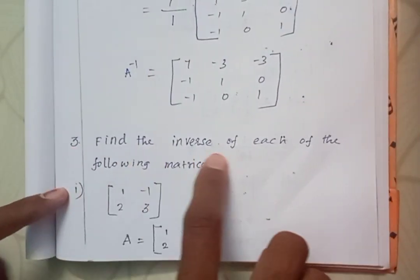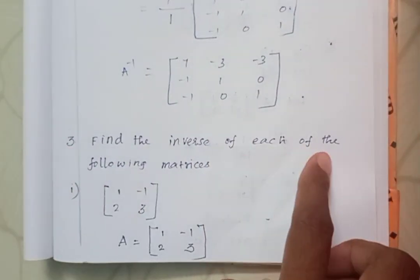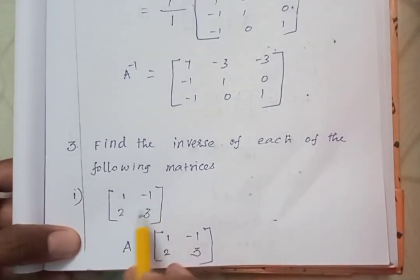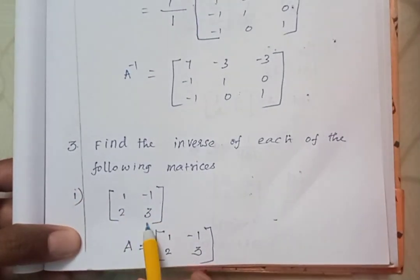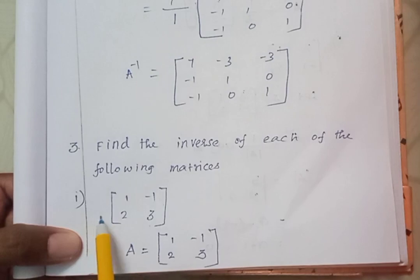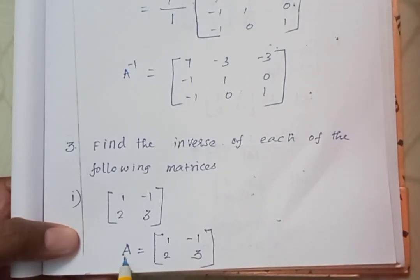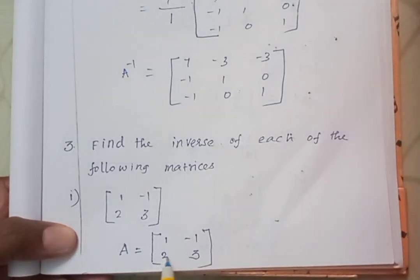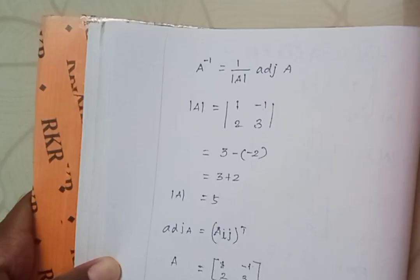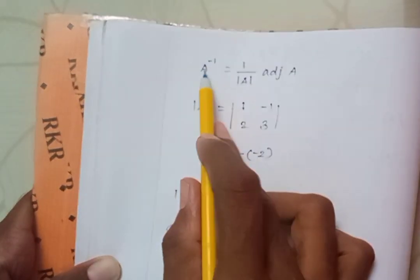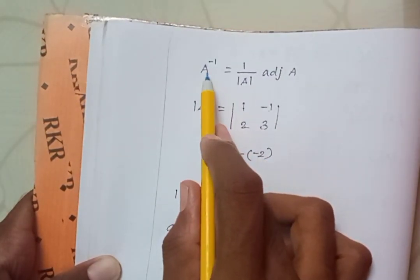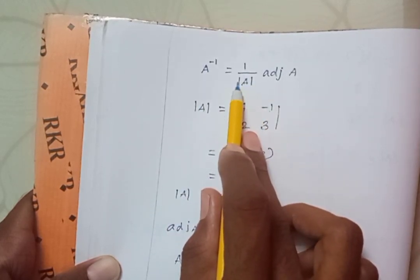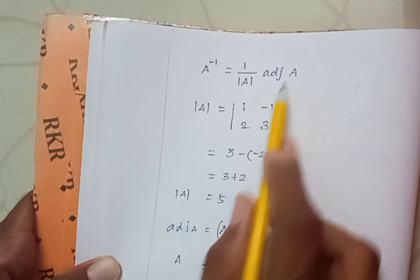Find the inverse of each of the following matrices. Given matrix A equal to 1, minus 1, 2, 3. We are asked to find A inverse. The formula for A inverse is: A inverse equals 1 divided by determinant of A, into adjoint of A.